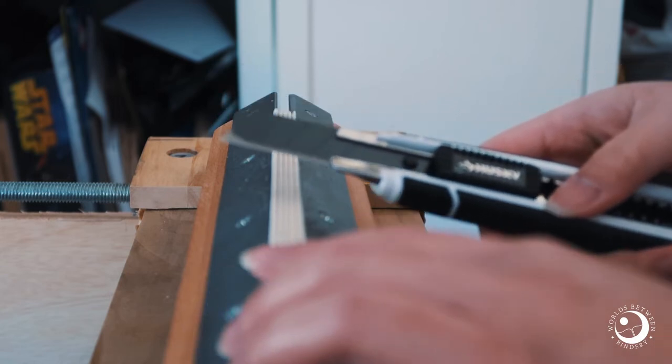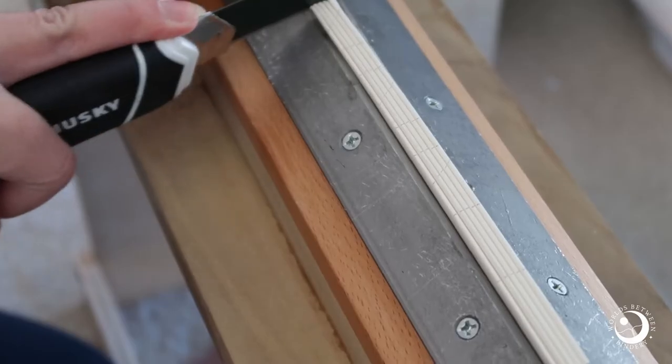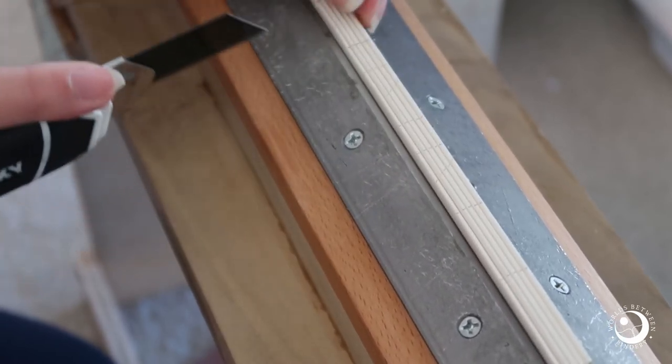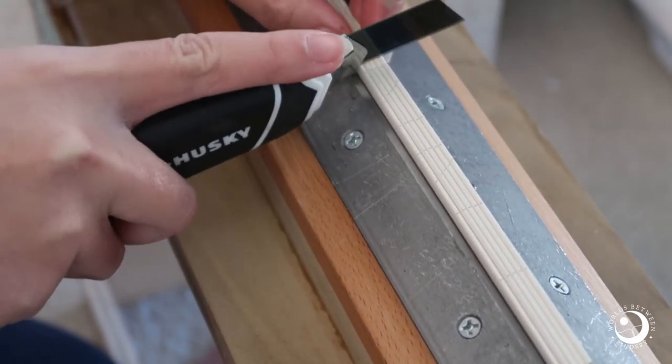Then I grab a few signatures at a time, maybe four or five. This just makes the slicing easier because the blade doesn't have to go through so many layers.